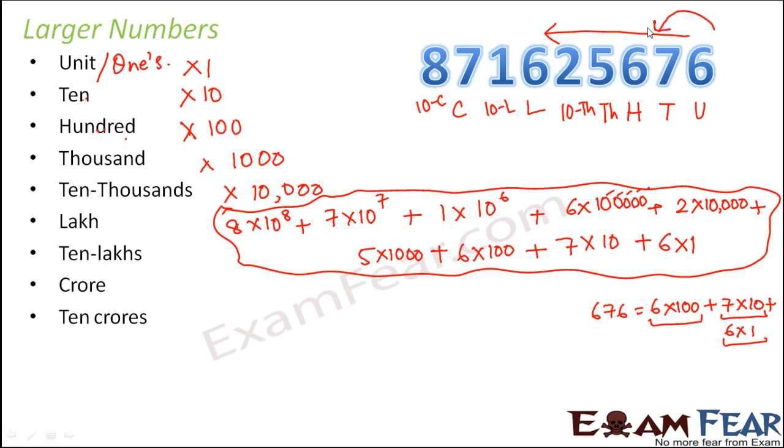So for every place, as you move each place, a zero increases. So if it is one, here it is 10, here it is 100, here it is 1000, here it is 10000, here it is 100000, and so on. So with every place, there is one zero increasing.